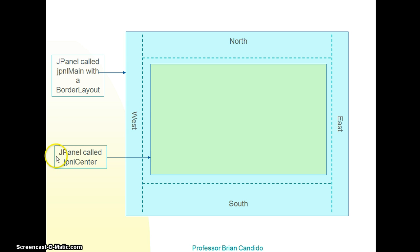We then are going to create a second JPanel called JPanelCenter. So here's the JPanel main. And here's the JPanelCenter. And we're going to apply a grid layout that is divided into two rows and two columns.